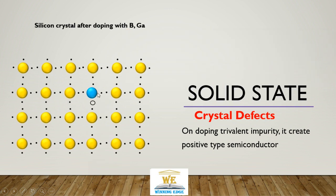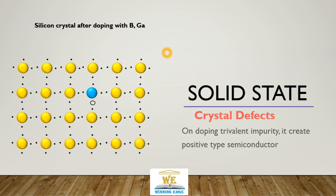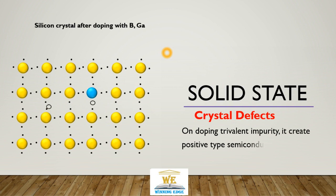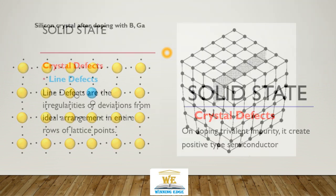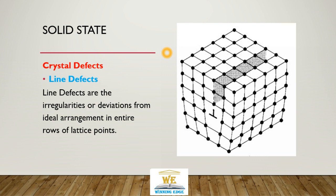Under an applied electric field, electrons and holes move in opposite directions: electrons move toward the positive terminal, and holes move toward the negative terminal. This concludes our discussion of point defects. Line defects are deviations from the ideal arrangement along an entire row of lattice points — a deviation along the entire row, just like a fissure.